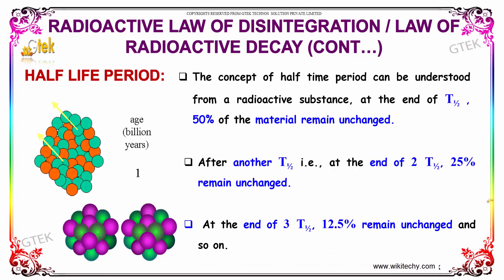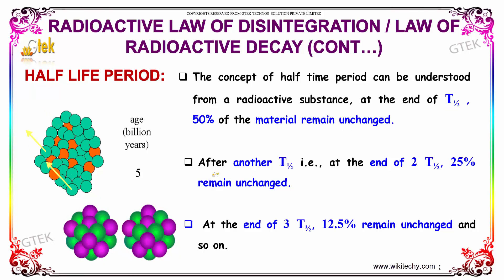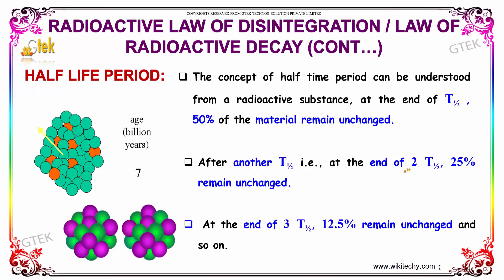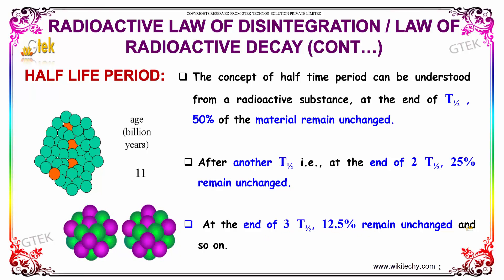The concept of half-life period can be understood as follows: at the end of T½, 50% of the material remains unchanged. After another T½, at the end of 2T½, 25% remains unchanged. At the end of 3T½, 12.5% remains unchanged, and so on.